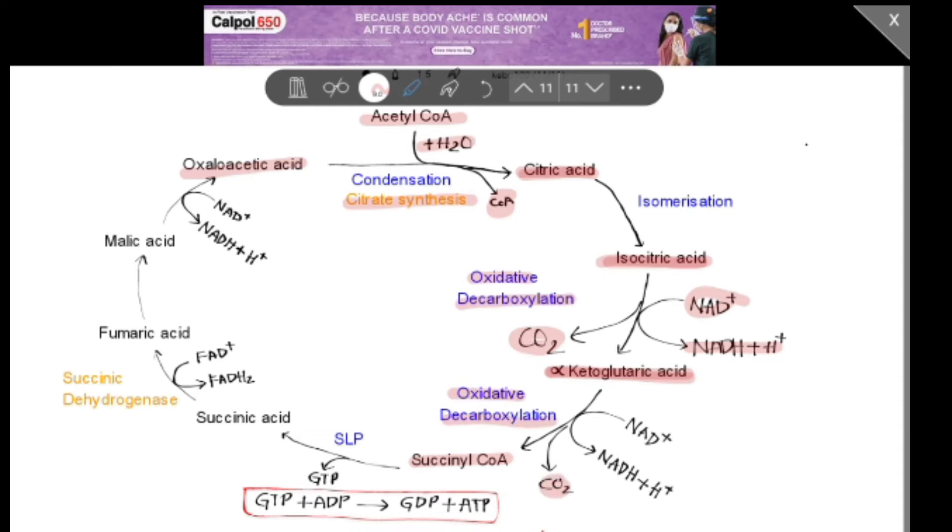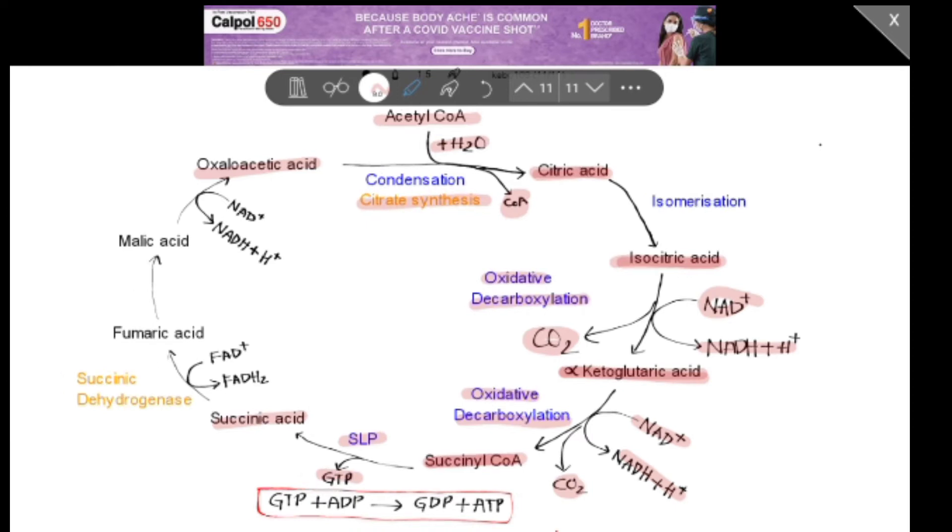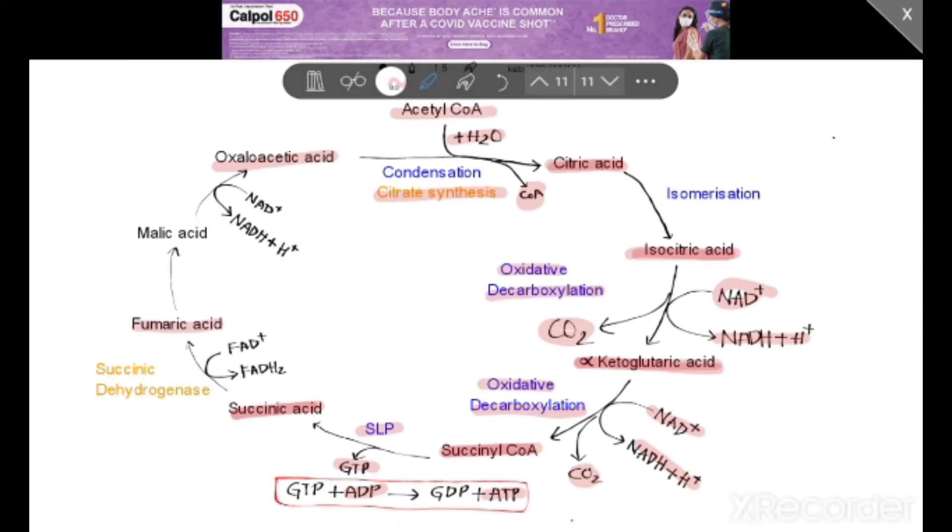In the next step, succinyl coenzyme A converts to succinic acid. This step is substrate-level phosphorylation. Here, a GTP molecule is released. In a coupled reaction, ADP converts to ATP. In the next step, succinic acid converts to fumaric acid. Here, unlike other steps, FAD+ changes to FADH₂. Succinic dehydrogenase enzyme is used in this step.